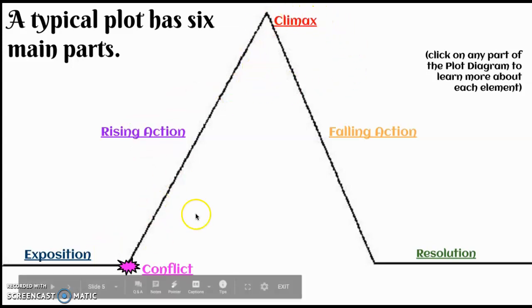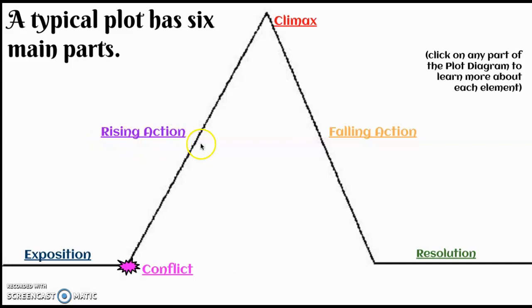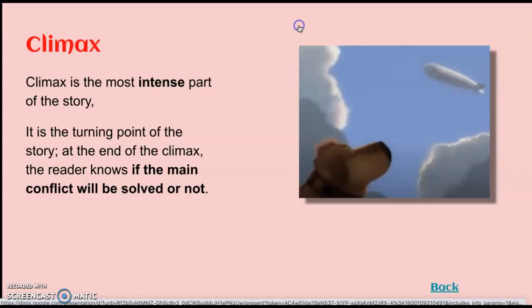This leads us back to our plot diagram. After our rising action and many events of the movie, we get to the climax. The climax is the most intense part of the story and the turning point, because at the end of the climax the reader knows if the main conflict will be solved or not. People sometimes get confused because the climax doesn't always have to be physical action — it can sometimes be mental or emotional action. The climax is basically when you can take the conflict and decide whether or not it has been solved.